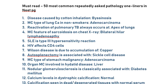The disease caused by cotton inhalation is byssinosis. Most common type of lung carcinoma in non-smokers is adenocarcinoma. Reactivation of pulmonary TB always occurs at the apex of lungs. Most common feature of sarcoidosis on chest X-ray is bilateral hilar lymphadenopathy. SLE is a type 3 hypersensitivity reaction. HIV affects CD4 cells. Wilson's disease is due to accumulation of copper. Autosplenectomy is associated with sickle cell disease.